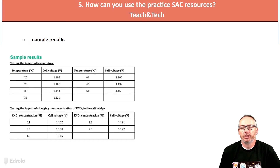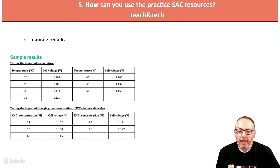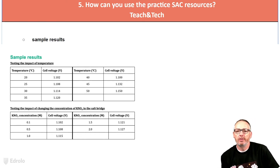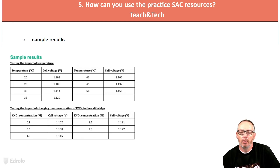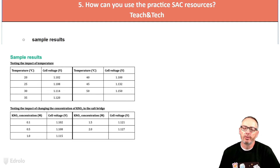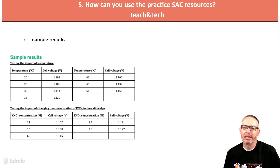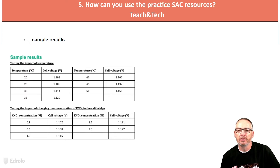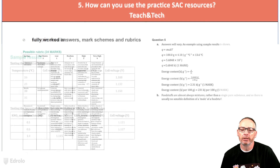Sample results — having taught all through COVID, sometimes you've got to pivot really quickly. Kids can be away, you can change the style of the practice SAC, and you can actually give them an analysis. We always give you results, and these results are based on what actually happens in a classroom in Victoria — they're authentic. This really helps students with regard to their genuine learning.